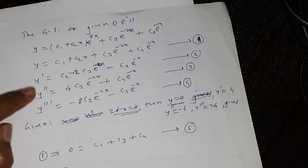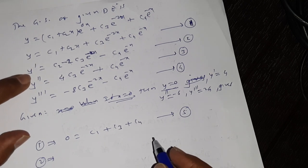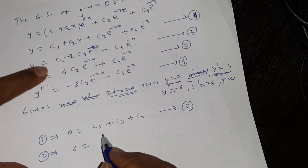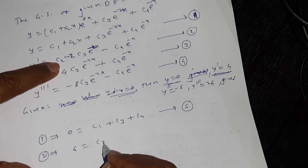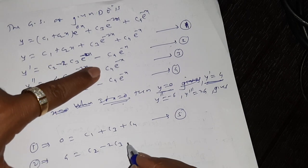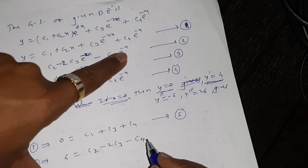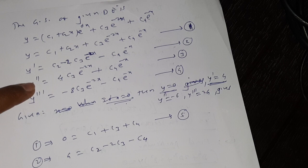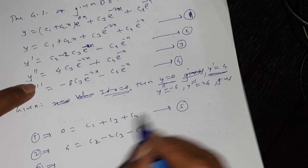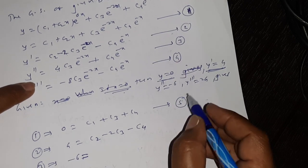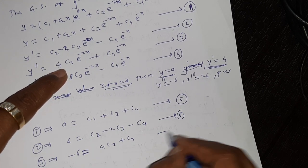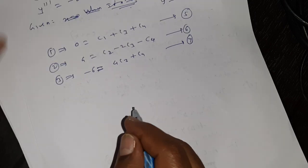Then from equation 2: y'=4 when x=0. Substituting gives c2 minus 2·c3·e^0 minus c4 = 4, that is c2 - 2·c3 - c4 = 4. This is equation 6. Then from equation 3: y''=-6 when x=0. Substituting gives 4·c3 + c4 = -6. This is equation 7.